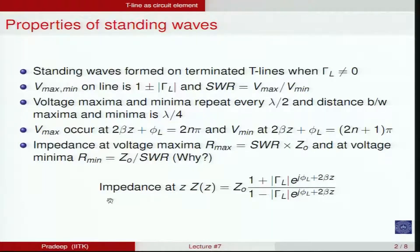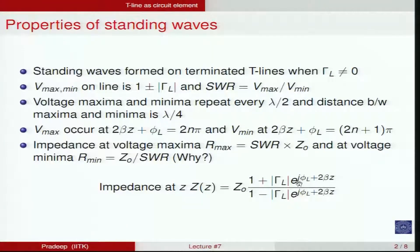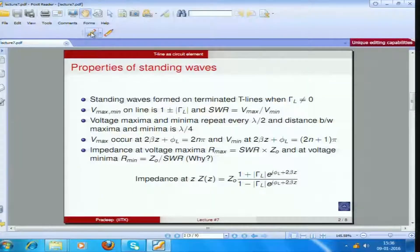At any point on the transmission line, the impedance is given by Z0 times (1 + |gamma_L| * e^(j*(phi_L + 2*beta*z))) divided by (1 - |gamma_L| * e^(j*(phi_L + 2*beta*z))), where the bracket covers the entire exponent phi_L + 2*beta*z.